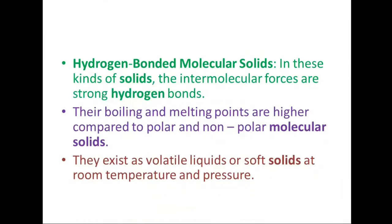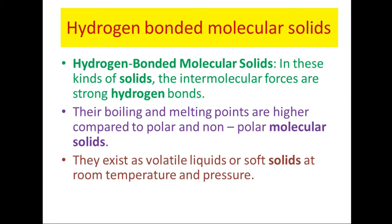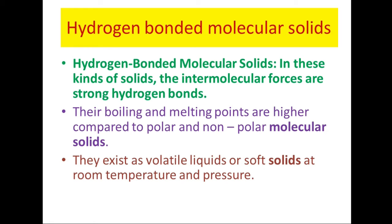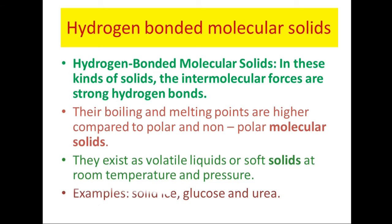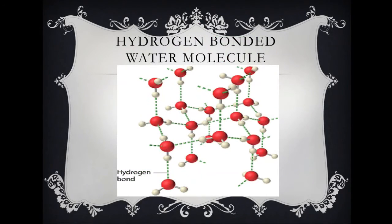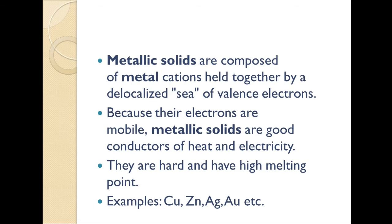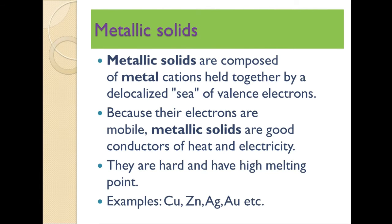Next, hydrogen-bonded molecular solids. In these kinds of solids, the intermolecular forces are strong hydrogen bonds present between the molecules. Their boiling and melting points are higher compared to both polar and non-polar molecular solids. They exist as volatile liquids or soft solids at room temperature and pressure. Examples include solid ice, water, and glucose.